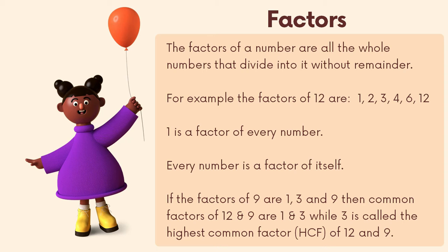Factors: the factors of a number are all the whole numbers that divide into it without remainder. For example, the factors of twelve are one, two, three, four, six, and twelve. One is a factor of every number, and every number is a factor of itself. The factors of nine are one, three, and nine, so the common factors of twelve and nine are one and three, while three is the highest common factor of twelve and nine.